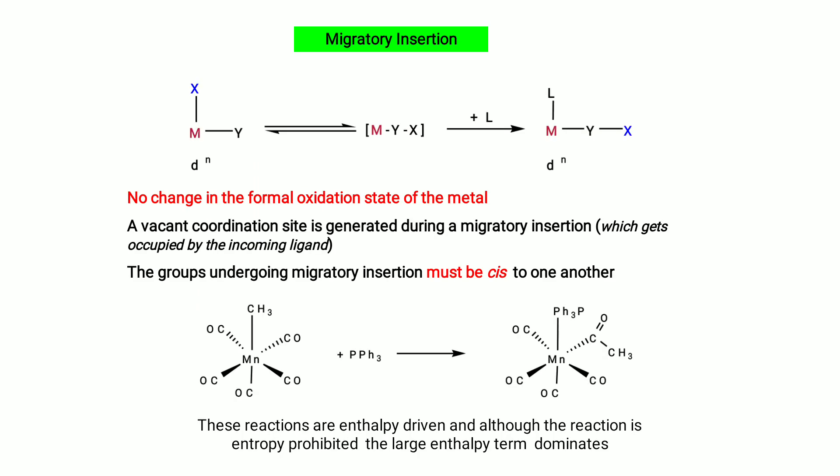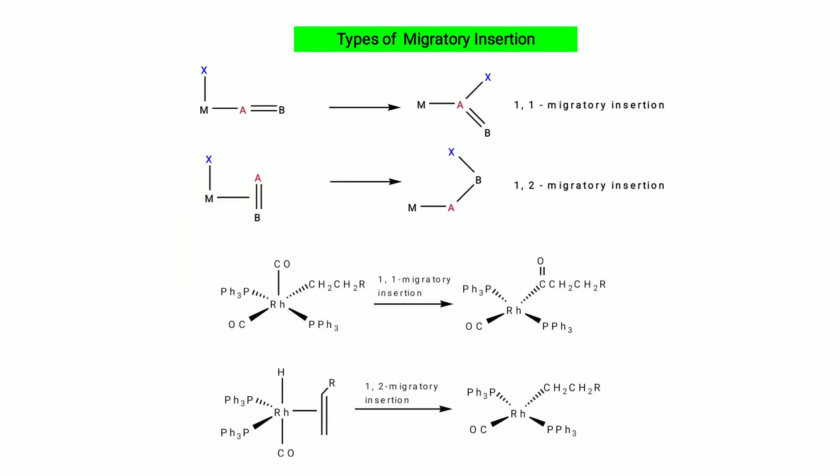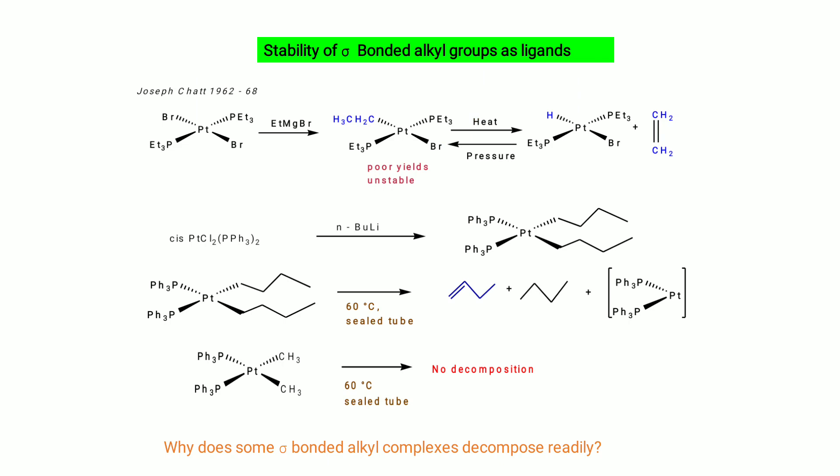Migratory insertion: no change in formal oxidation state of the metal, but a vacant coordination site is generated during migratory insertion, which gets occupied by the incoming ligand. The groups undergoing migratory insertion must be cis to each other. These reactions are enthalpy driven — although entropy-prohibited, the large enthalpy term dominates. Types include 1,1-migratory insertion and 1,2-migratory insertion. Sigma-bonded alkyl groups as ligands show characteristic stability patterns.